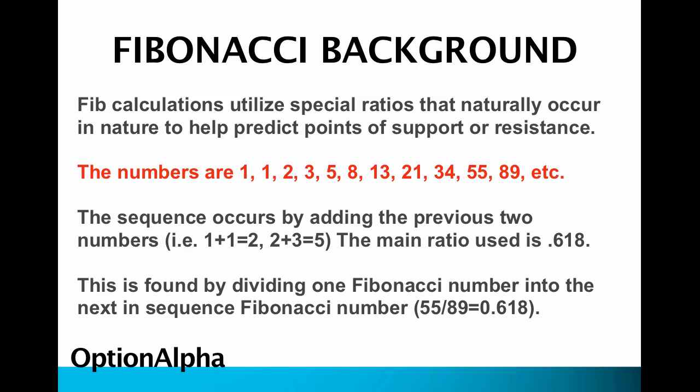The sequence occurs by adding the previous two numbers sequentially: starting with 1 and 1, that's 2; 2 and 3 is 5; 3 and 5 is 8; 8 and 13 is 21, and so on. The main ratio used is 0.618, found by dividing one Fibonacci number into the next in the sequence. That's the background on the Fib levels — everyone wants to know where they come from, so there's a quick and dirty example.